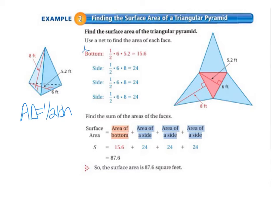So that's the bottom of our pyramid. And when we multiply that out, it's 1 half times 6 times 5.2, so that equals 15.6. And then each side, there's only three sides this time because they're surrounding a triangle, not a square. So each side is, the height is 8 feet, and the base is 6 feet. So that's 1 half times 6 times 8, which equals 24.